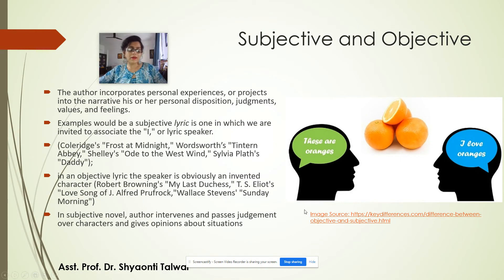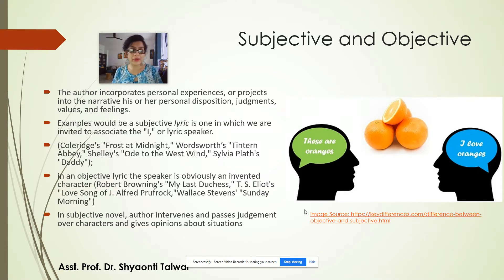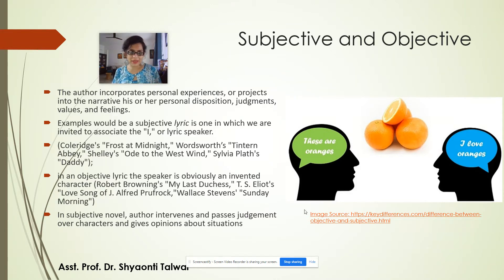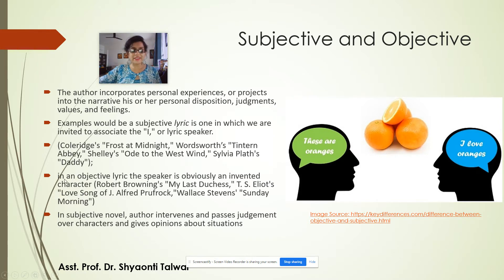We saw the subjective approach of authors and critics, and in this video we are going to look at the objective approach. In the last video we discussed some poems by romantic poets which had a subjective element in them, and where the narrator and the author kind of fused into one entity. Now let's contrast this with the objective lyric.